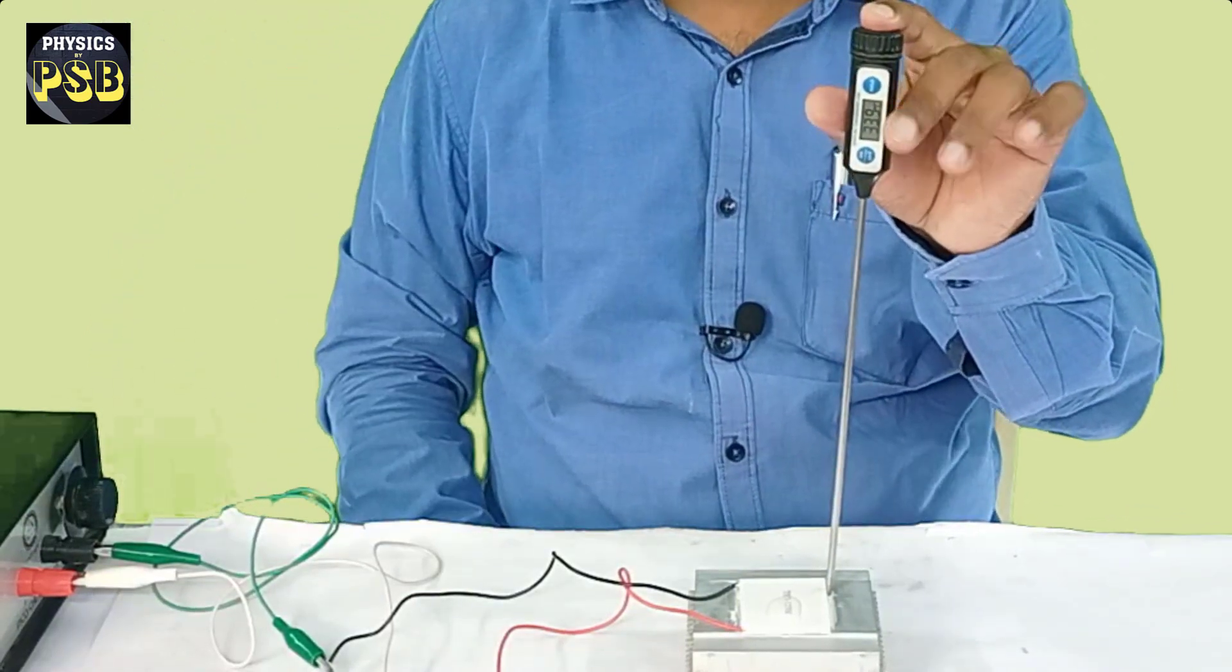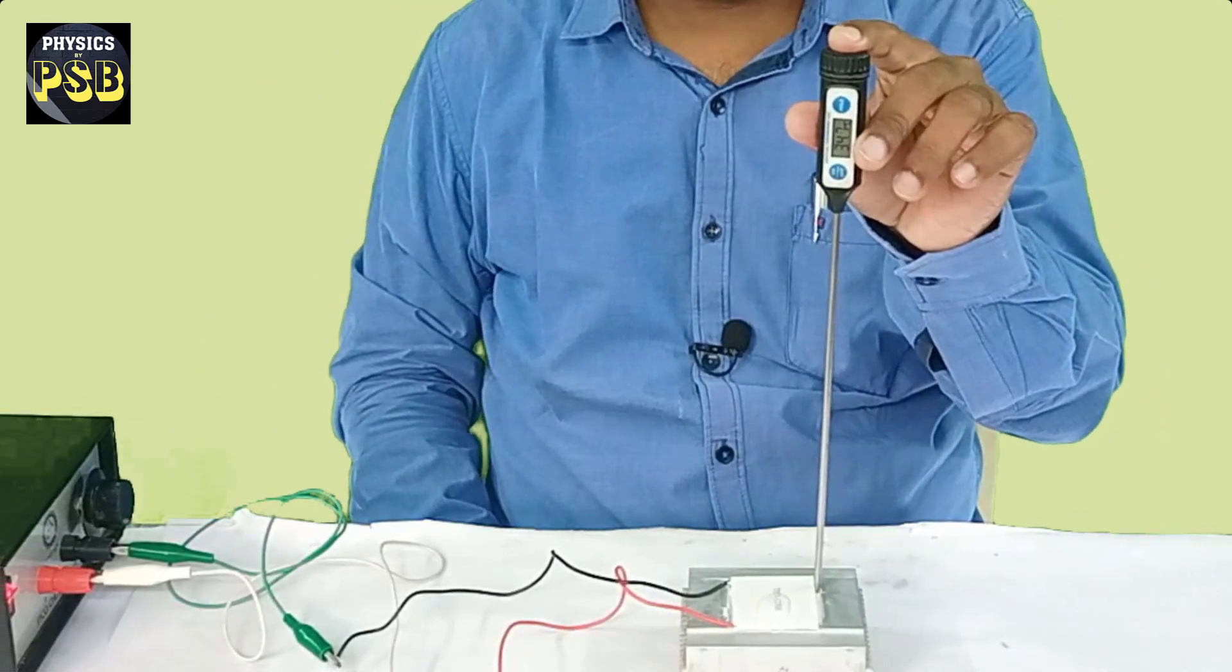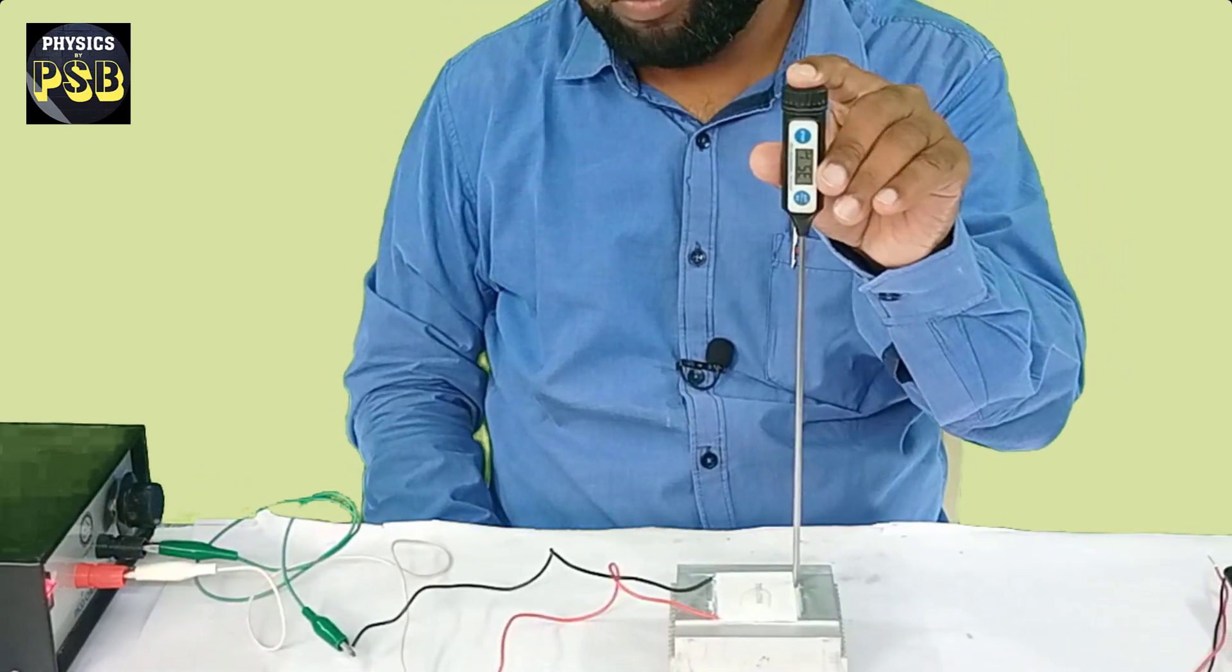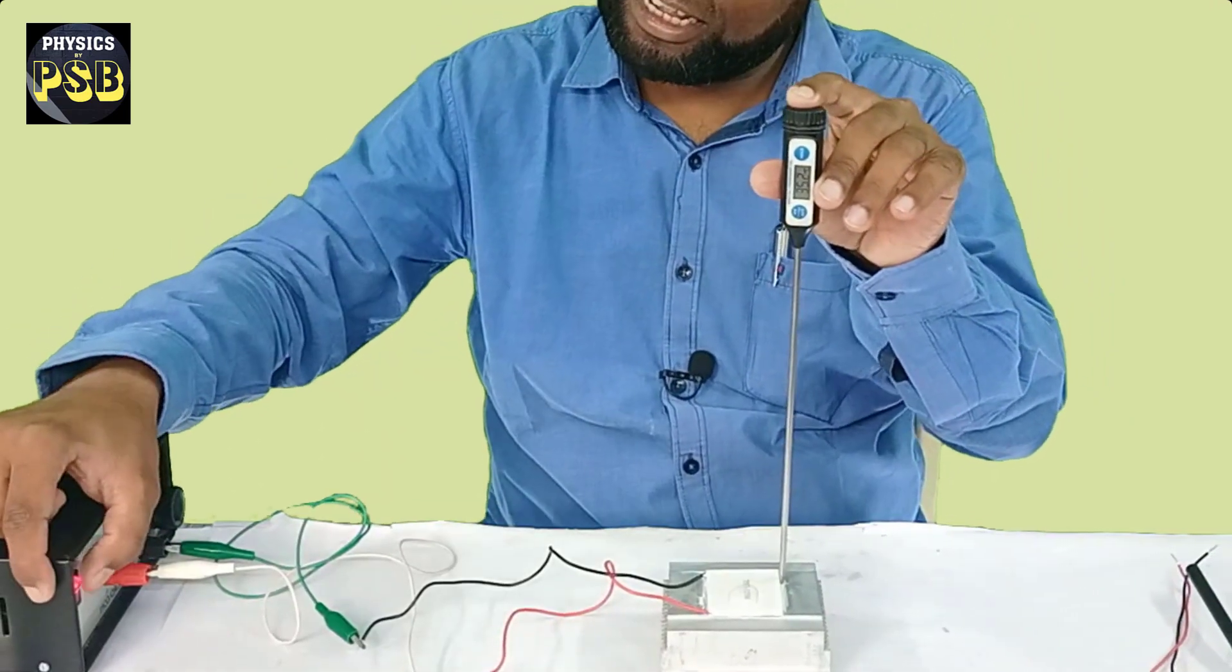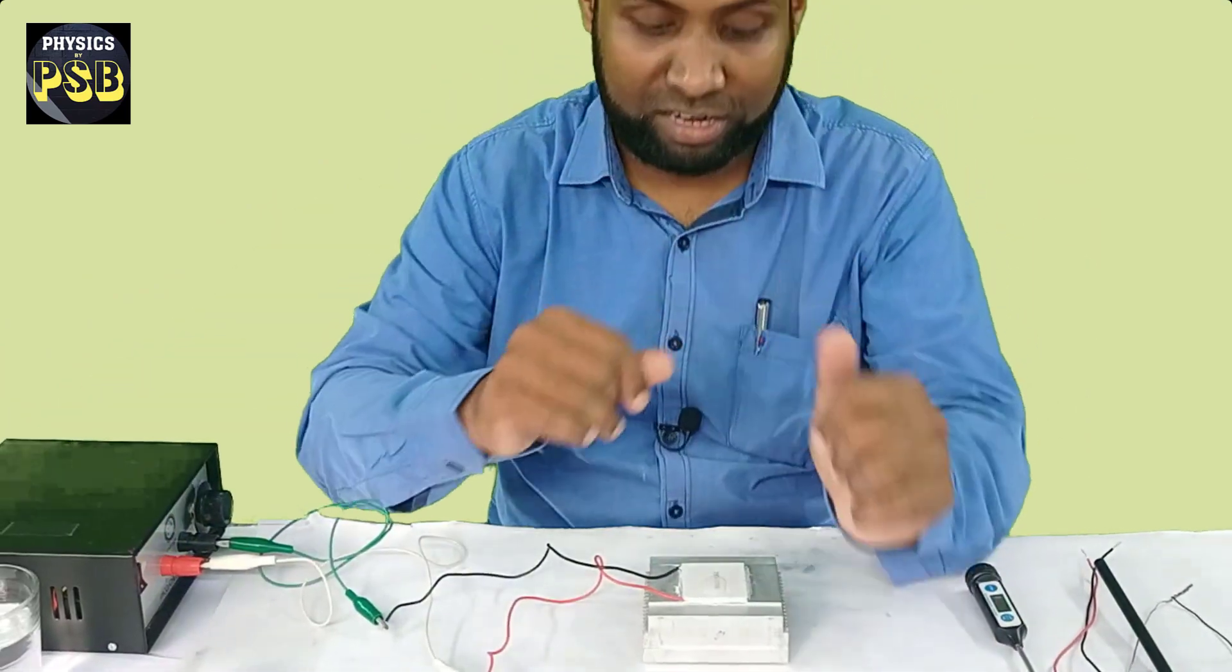This shows that when a current is passed through a thermocouple, one end becomes hot, another end becomes cold. This phenomenon is known as Peltier effect. And it is a reversible effect.